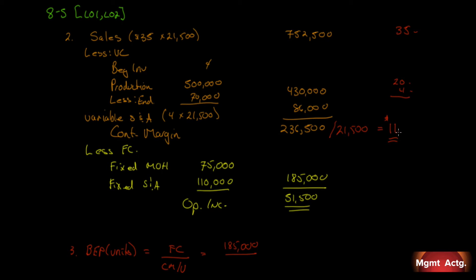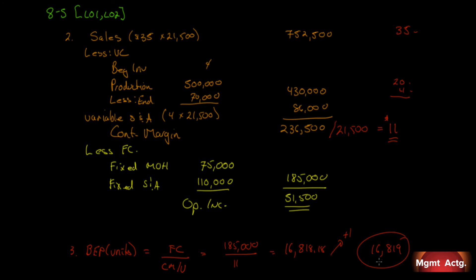Dividing $185,000 by $11 gives 16,818.18 units. A key rule: whenever break-even gives a decimal, always round up to the next whole number — even if it's just 0.001. At 16,818 units we'd be slightly below break-even, so we round up. The break-even point is 16,819 units.